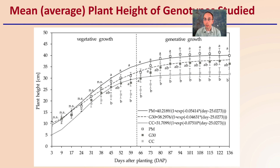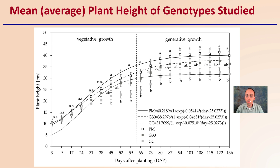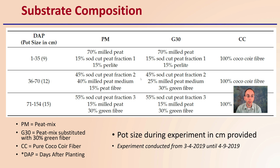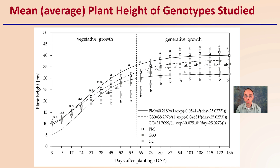So what's the mean or average plant height of the genotypes studied? Here in the details of the study we're just looking at the substrates. This dotted line here represents the vegetative growth, and then the generative growth — usually called the flowering phase. Overall, the highest plant height was the PM, followed by the G30, followed by the CC. So PM is the peat mix, G30 is the peat mix substituted with 30% green fiber, and CC is the coconut fiber. You can see how that comparison occurred over the days after planting.